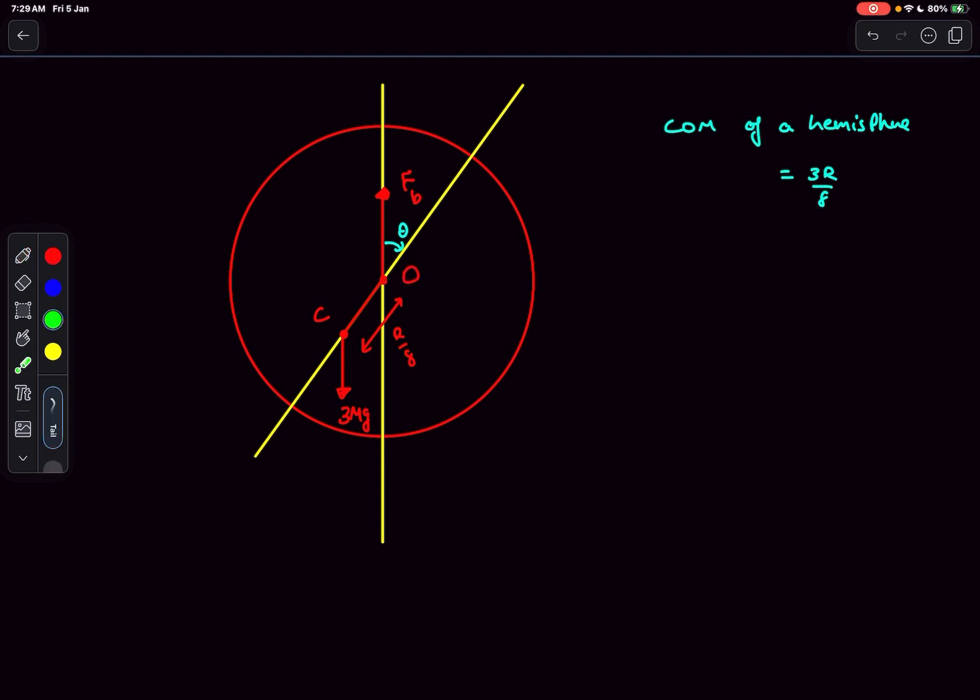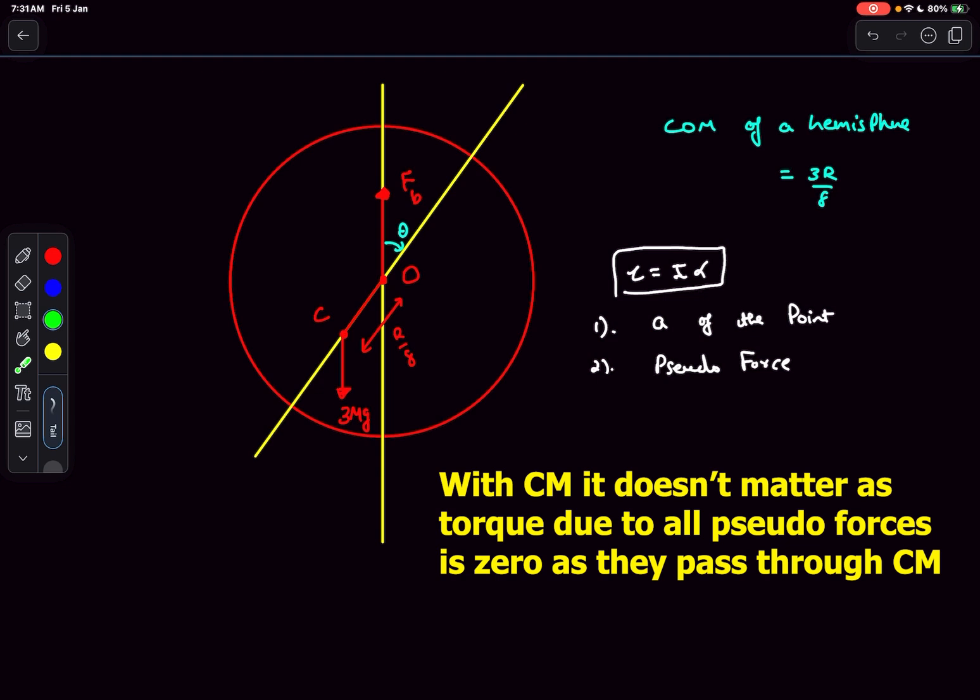We have to find the restoring torque. We have two ways of approaching this problem: we can either find the torque about point O or we can find the torque about point C. But if you're approaching this problem by finding the torque about point O, then you have to pay attention to one very important fact: point O is an accelerated point. If you want to apply tau equal to I alpha about any point other than the center of mass, then you first have to find the acceleration of that point, apply the pseudo force on the center of mass, and then take into account the pseudo torque. Only then can you write tau equal to I alpha about point O or any other point.